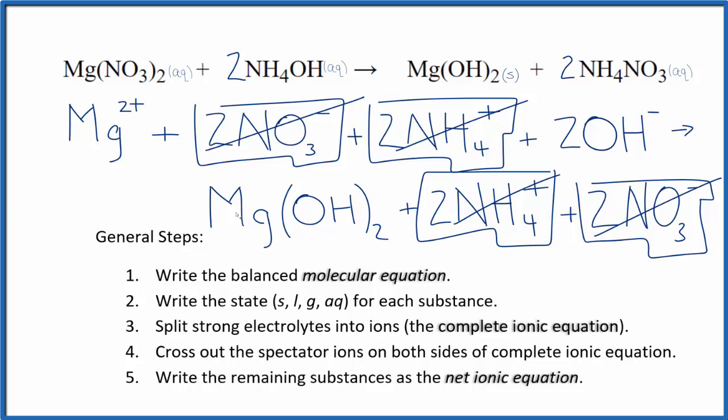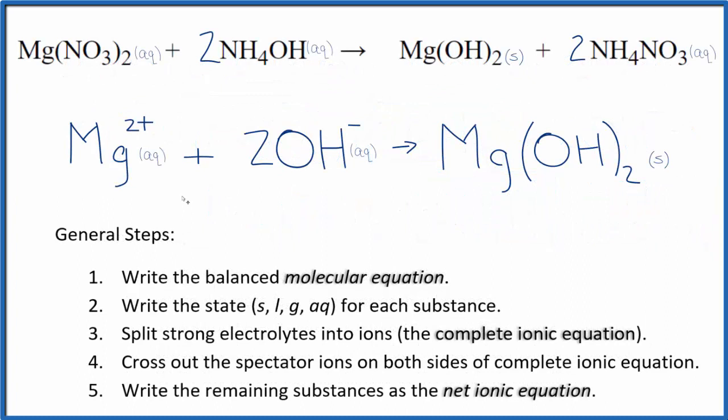Everything else is unique. This is the net ionic equation for Mg(NO3)2 plus NH4OH. Writing the states cleanly, this is the balanced net ionic equation for magnesium nitrate plus ammonium hydroxide.